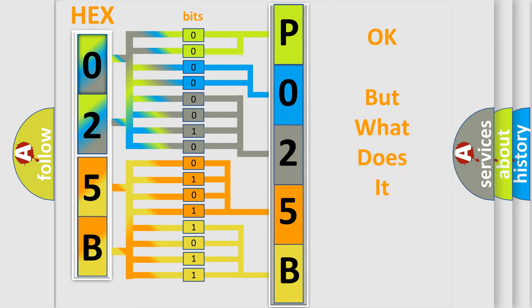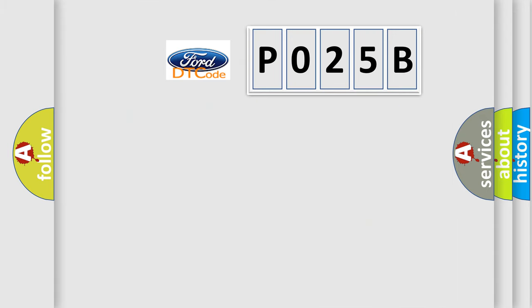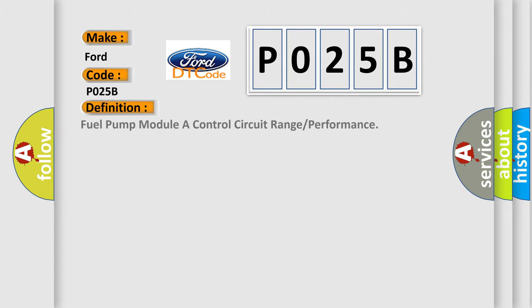We now know in what way the diagnostic tool translates the received information into a more comprehensible format. The number itself does not make sense to us if we cannot assign information about what it actually expresses. So, what does the diagnostic trouble code P025B interpret specifically?